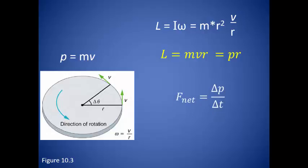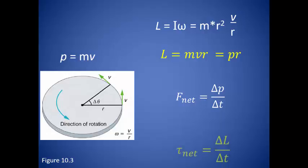We can also relate the angular momentum of an object to the amount of torque that it exerts to get the object moving. Recall that net force is equal to the change in momentum over time. Since torque is essentially the force being applied to the object, we can substitute in our angular momentum just like we substitute in torque for net force. So applying a larger torque will result in the angular momentum being larger.